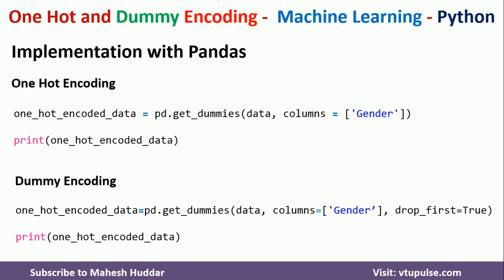We use the pandas `get_dummies` function: `pd.get_dummies(data, columns=['gender'])`. This gives us the one-hot encoded data. For dummy encoding, everything is the same except we add one extra attribute: `drop_first=True`. Once you pass this attribute, you will get dummy encoded data.